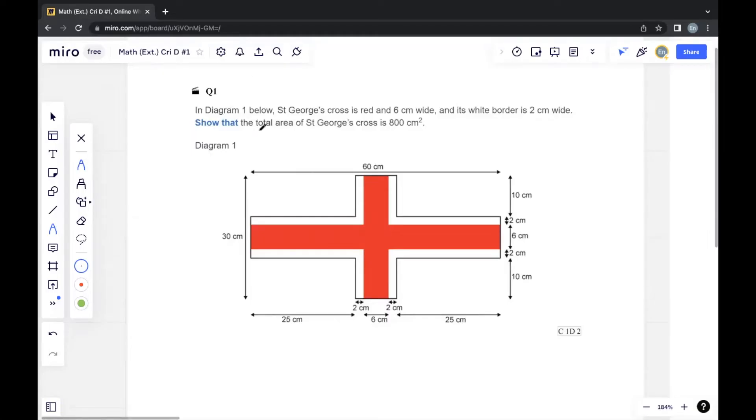Let's read question 1. In diagram 1 below, St. George's Cross is red and 6 cm wide, and its white border is 2 cm wide. Show that the total area of St. George's Cross is 800 cm².